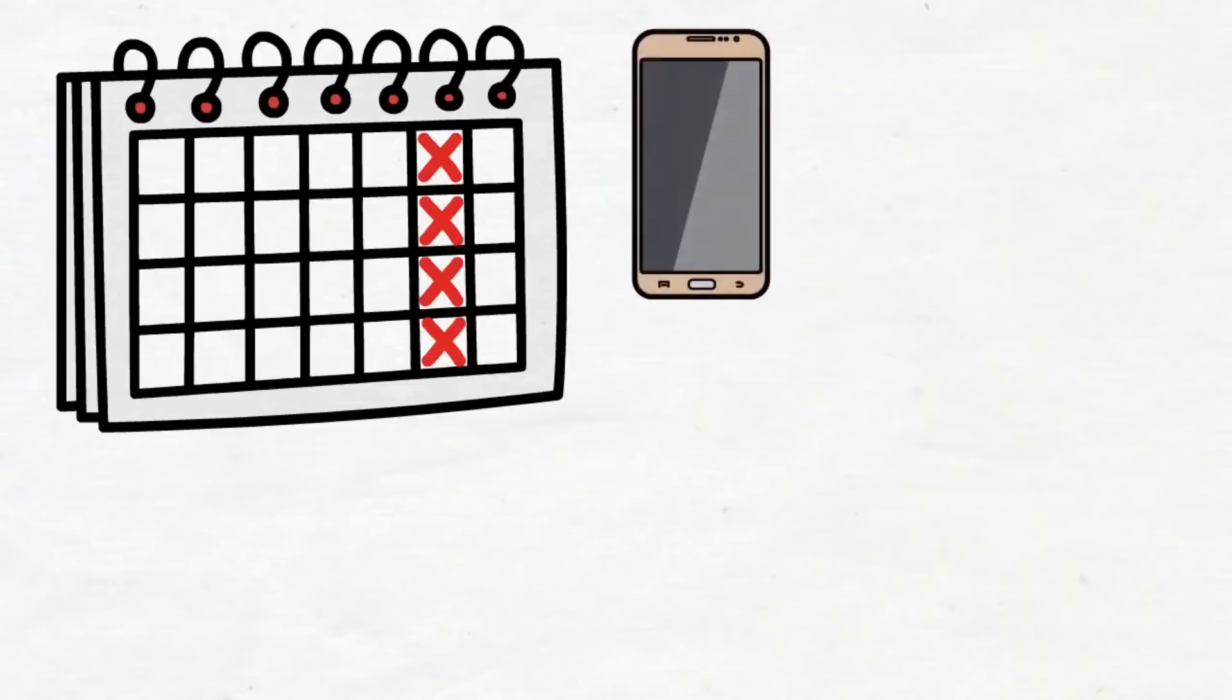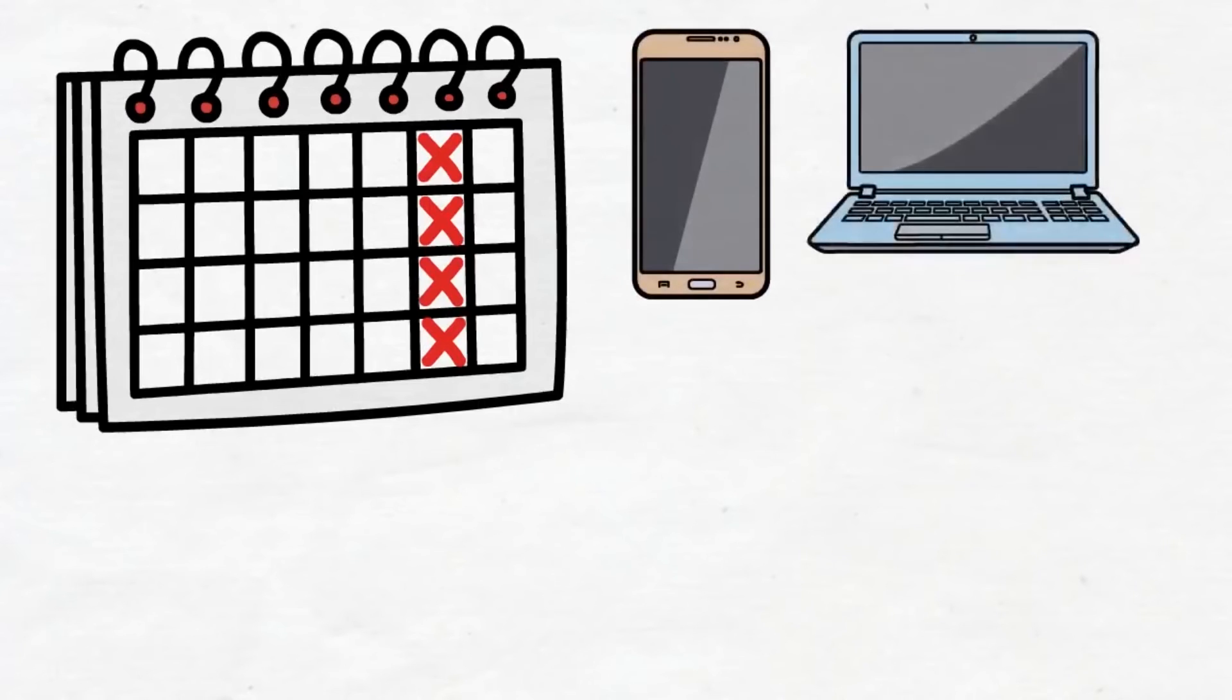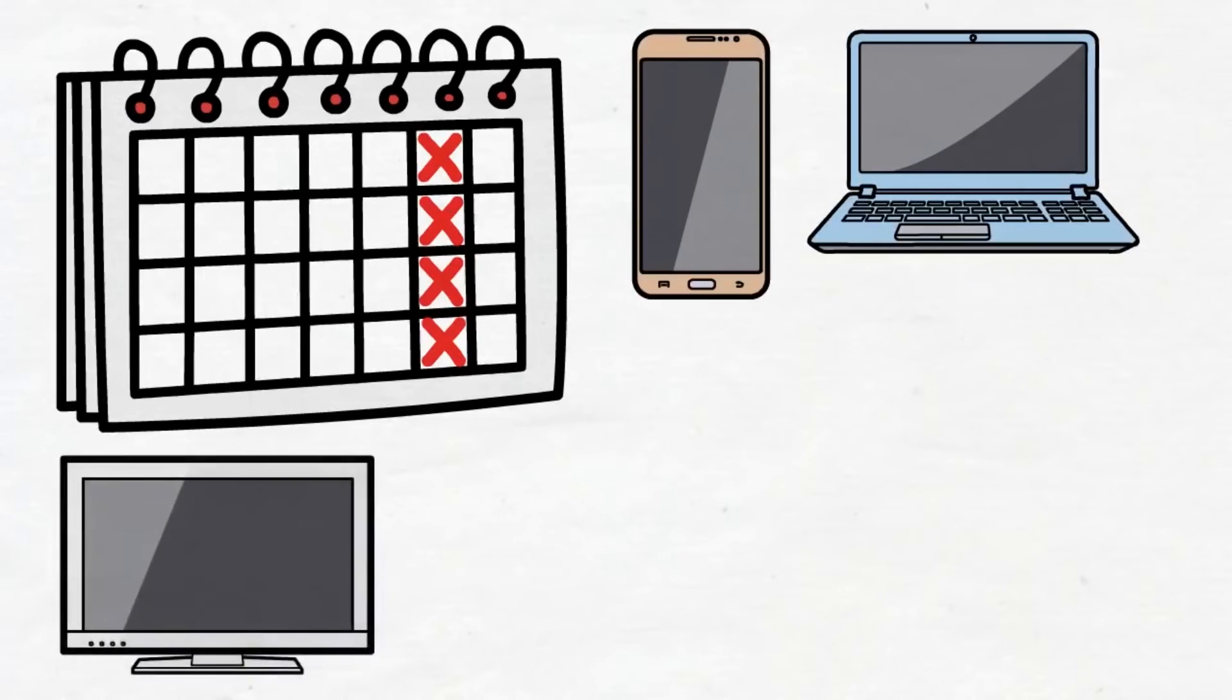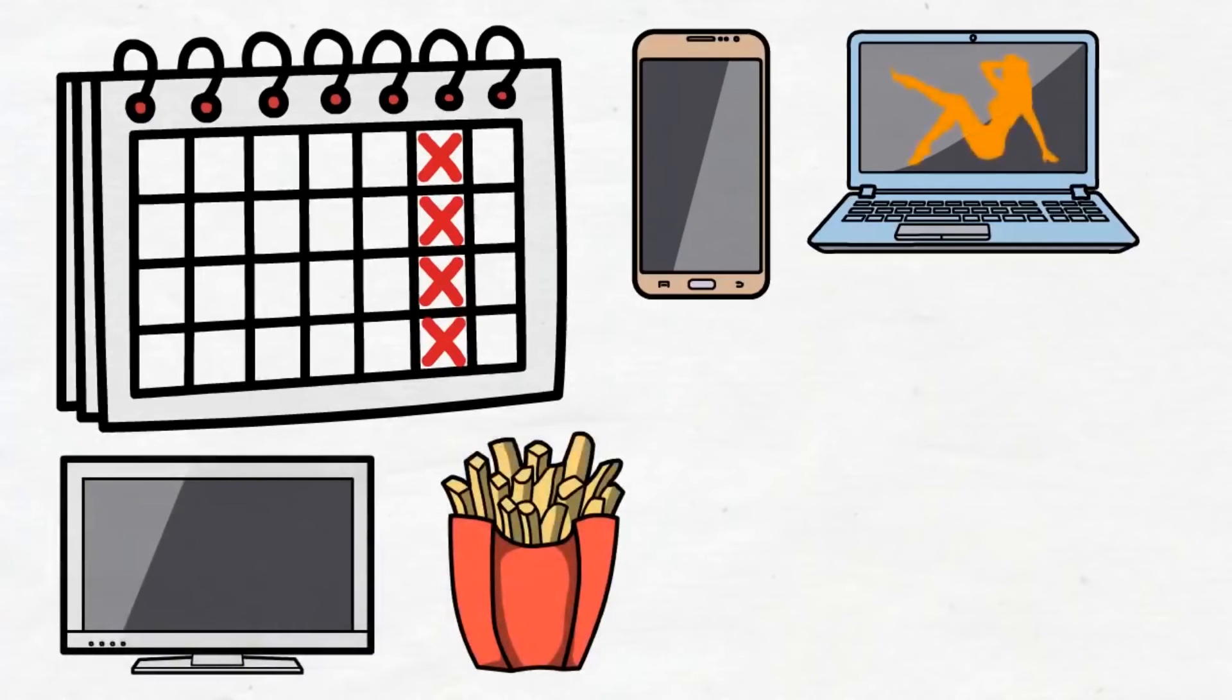Maybe checking your phone all the time, playing video games on your computer, binge watching TV, eating junk food, watching internet pornography, whatever. And from now on, every single week for one whole day, you're going to avoid that activity. You can still do other things, but the behavior you pick is off limits.